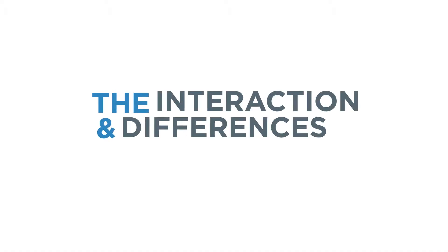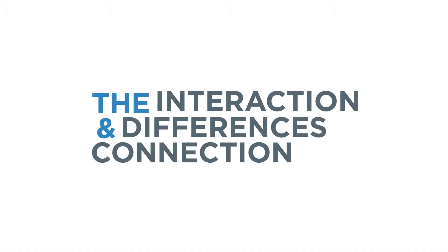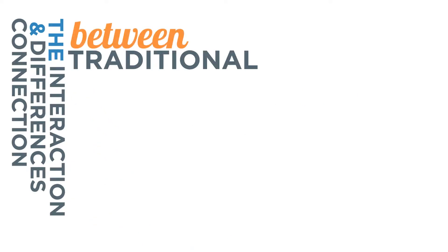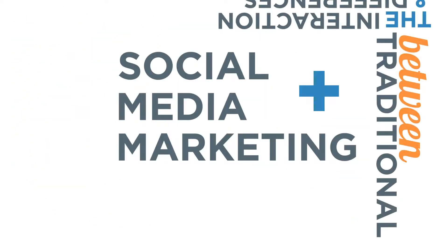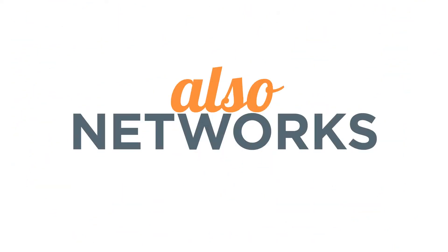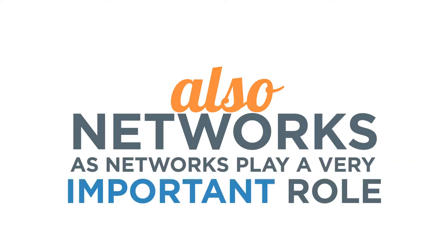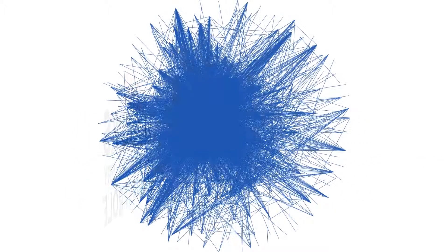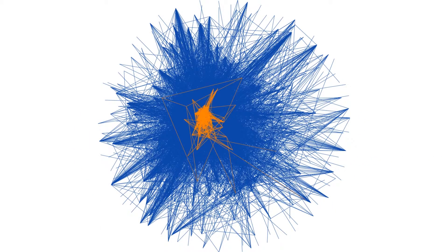What we are going to cover in the course is the interaction and differences, and the connection between traditional and social media marketing. Also networks, as networks play a very important role in the diffusion of information in social media.